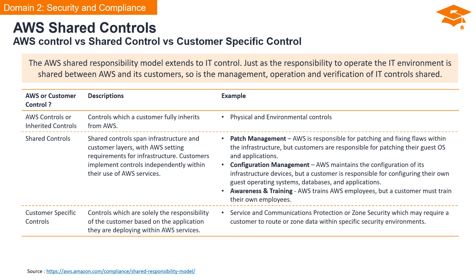Lastly, we have customer-specific controls — controls that are solely the responsibility of the customer, depending on the application deployed within AWS services. For example, service and communications protection or zone security might require a customer to route or zone data within specific security environments. In a nutshell, the AWS Shared Responsibility Model ensures that IT controls are a collaborative effort. Whether it's AWS controls, shared controls, or customer-specific controls, it's a tag team to keep things secure and running smoothly.